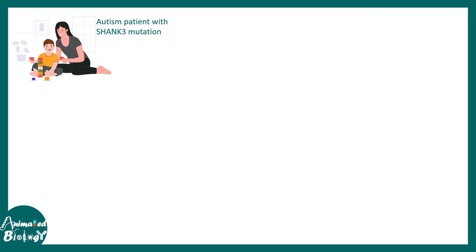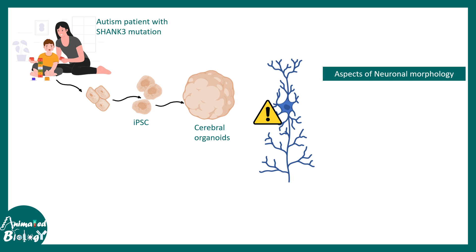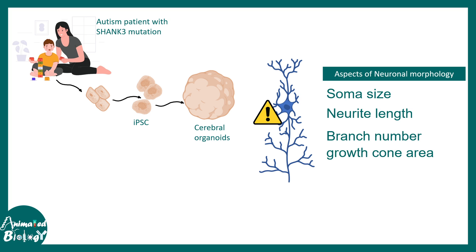In one study, autistic patients with Shank3 mutations had their iPSCs converted into cerebral organoids. When scientists investigated the neurons generated from these organoids, they found that soma size, neurite length, branch number, and growth cone area were all altered in organoids derived from autistic patients. This gives clues about how these mutations can possibly affect organoid development or brain development in patients.